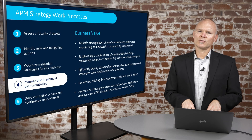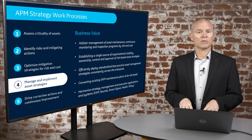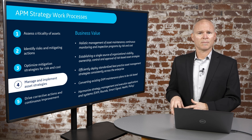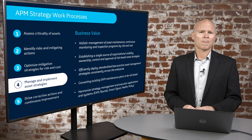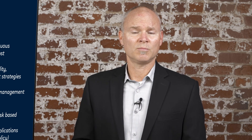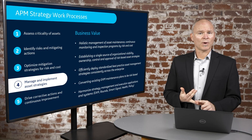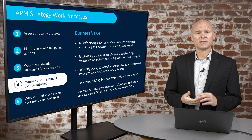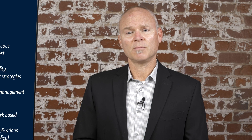Once approved, it's all about implementing and operationalizing the activities defined in the strategy. Some of those activities are traditional maintenance type activities implemented in an EAM system — we have integration with EAM to support that. Others are implemented directly in the APM tool: traditional inspections, operator rounds activities, calibrations, or other types of tasks.